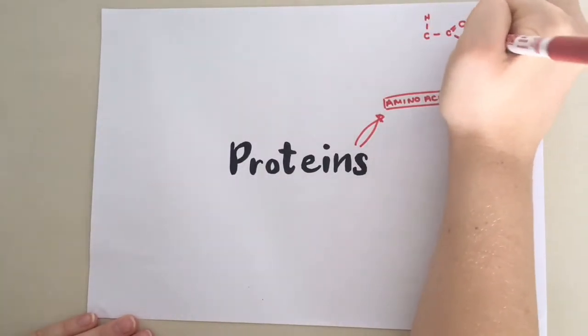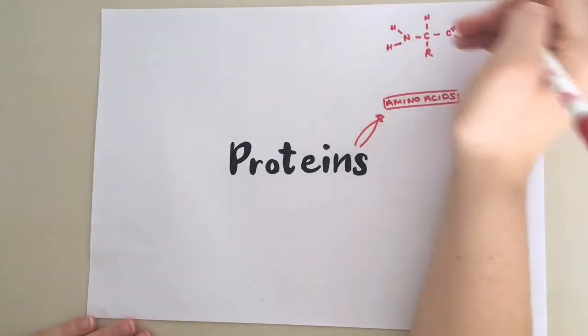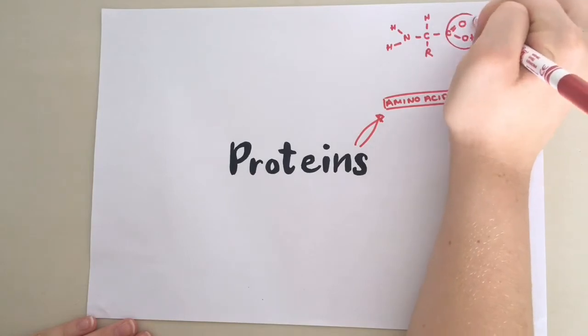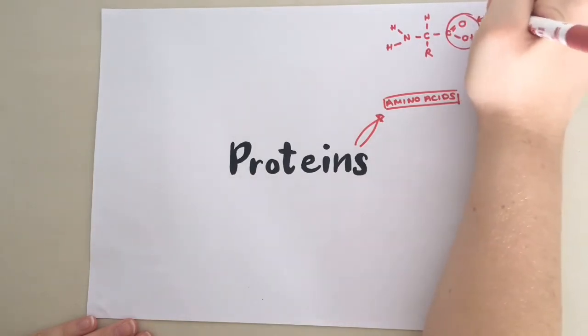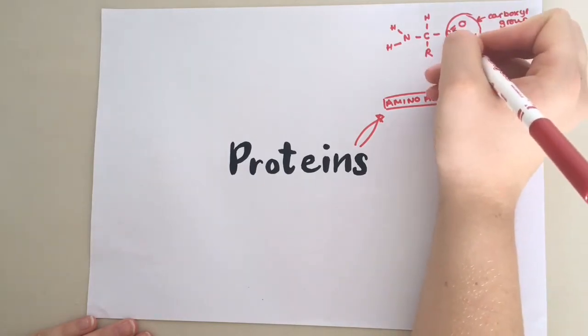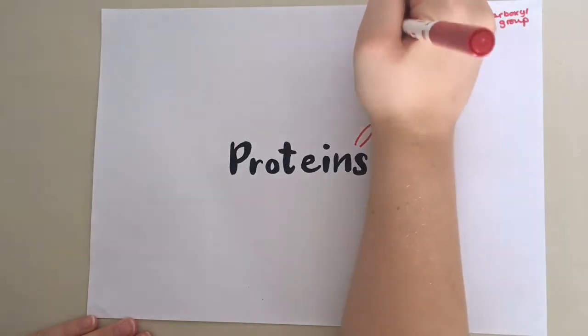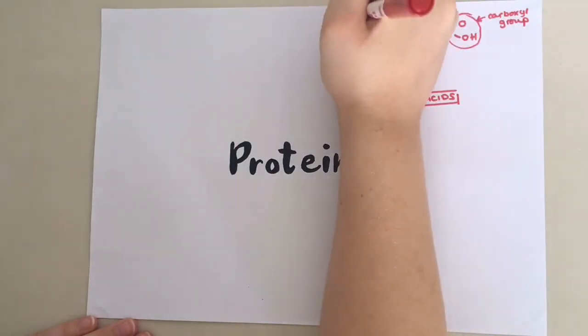So I'll start by drawing the structure of an amino acid. All amino acids will have this group here, which is known as a carboxyl group. It's a C double bonded to an oxygen and then single bonded to an OH. They will also have this group here, NH2, which is known as an amine group.